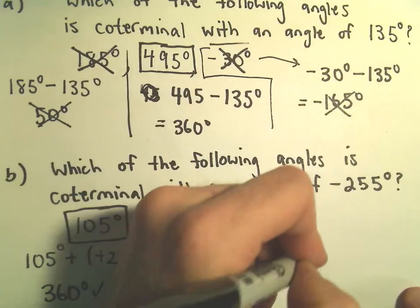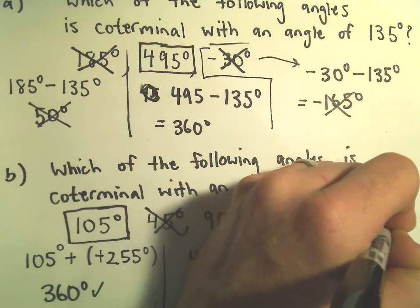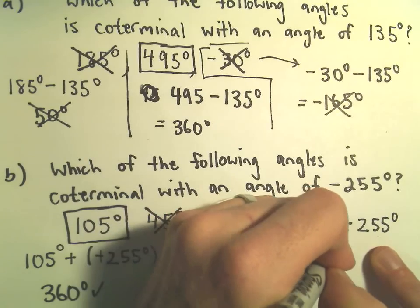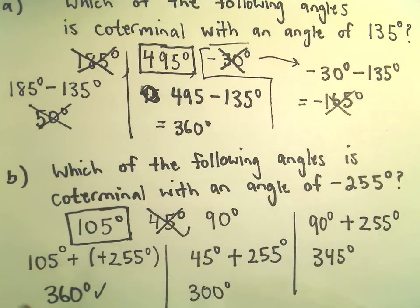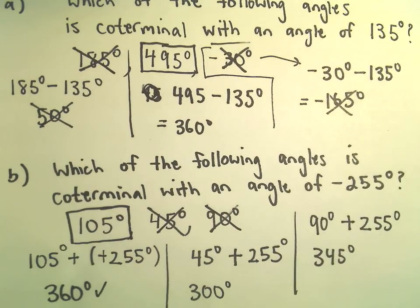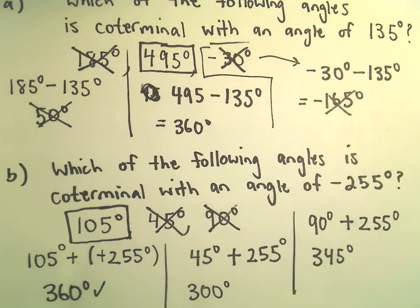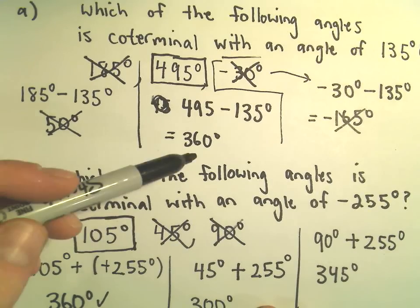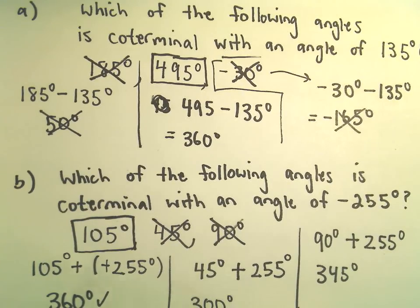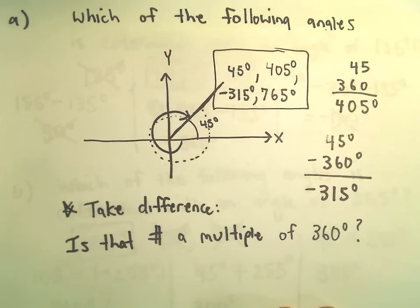Likewise, if we check our 90 degrees, 90 degrees minus negative 255 degrees, that's going to give us 345 degrees. And again, that's simply not a multiple of 360, so 90 degrees is also not coterminal with the angle negative 255 degrees. So again, this is basically all you're doing. Mechanically, you just subtract them, see if it's a multiple of 360. But again, intuitively, all you're really trying to do is just figure out what angles put you in the same direction at the same spot.